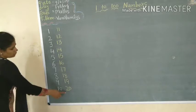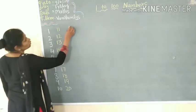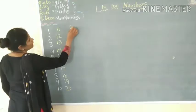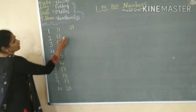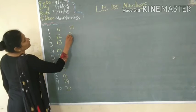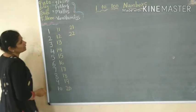Now after 20, the next number is 21. Then comes 22.